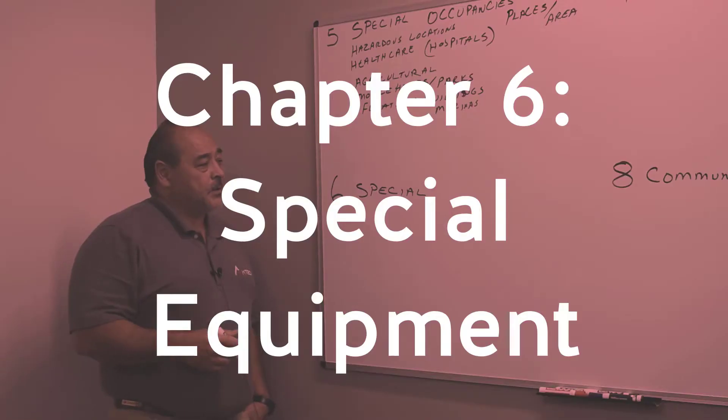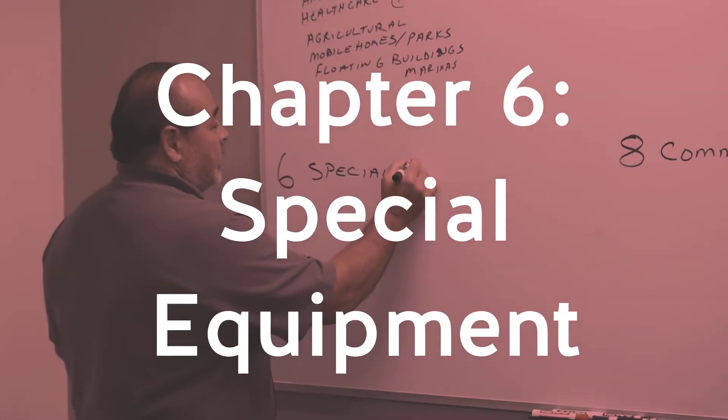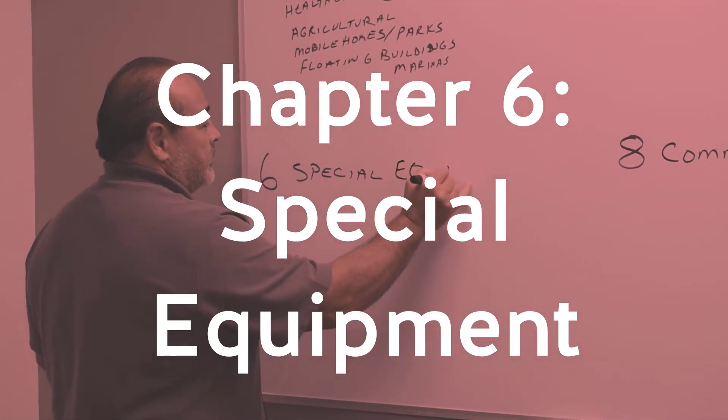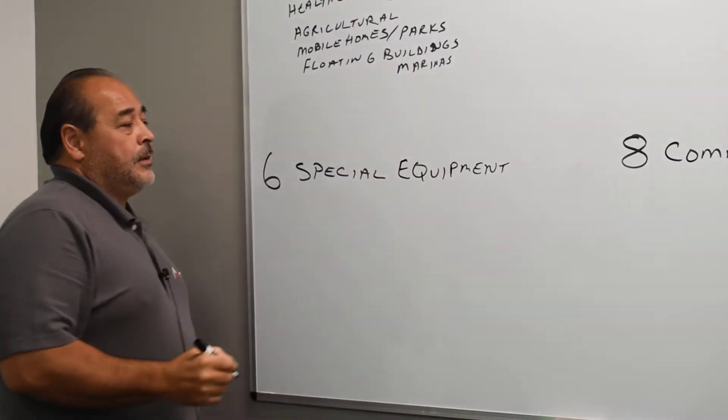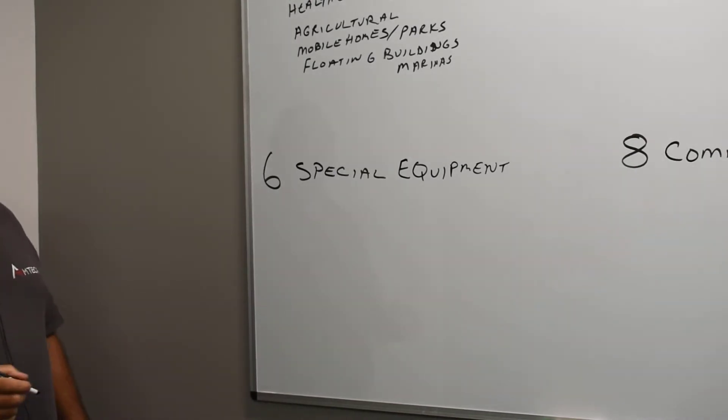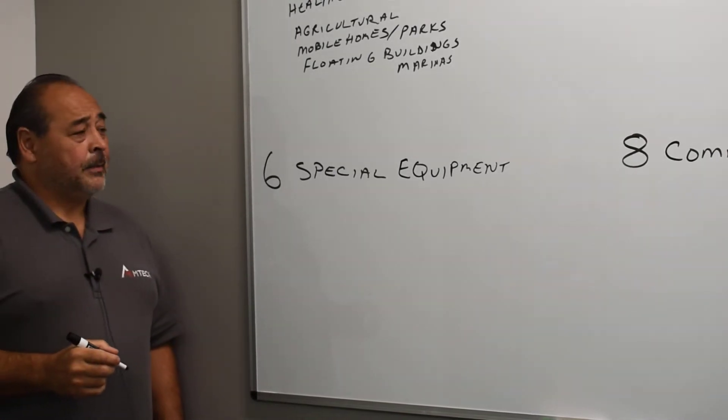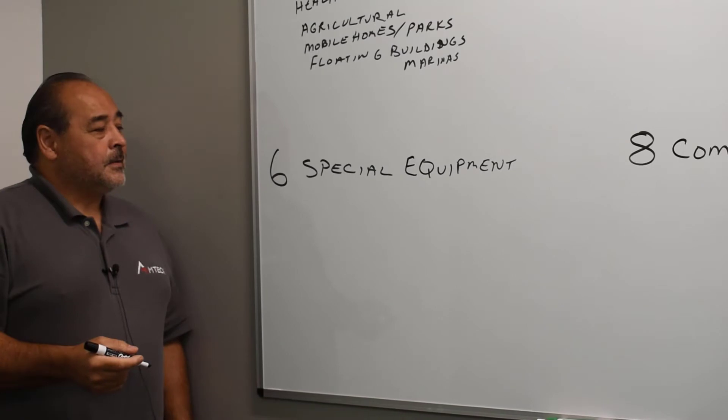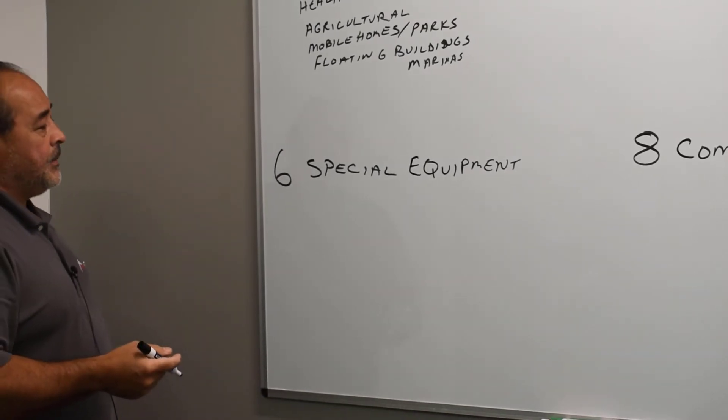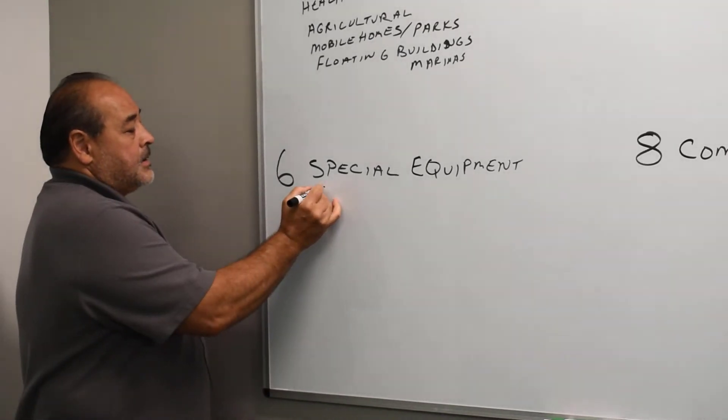Let's talk about chapter six. Chapter six is special equipment. So this is not your normal everyday equipment. Now the word equipment is a very generic term. It means everything.